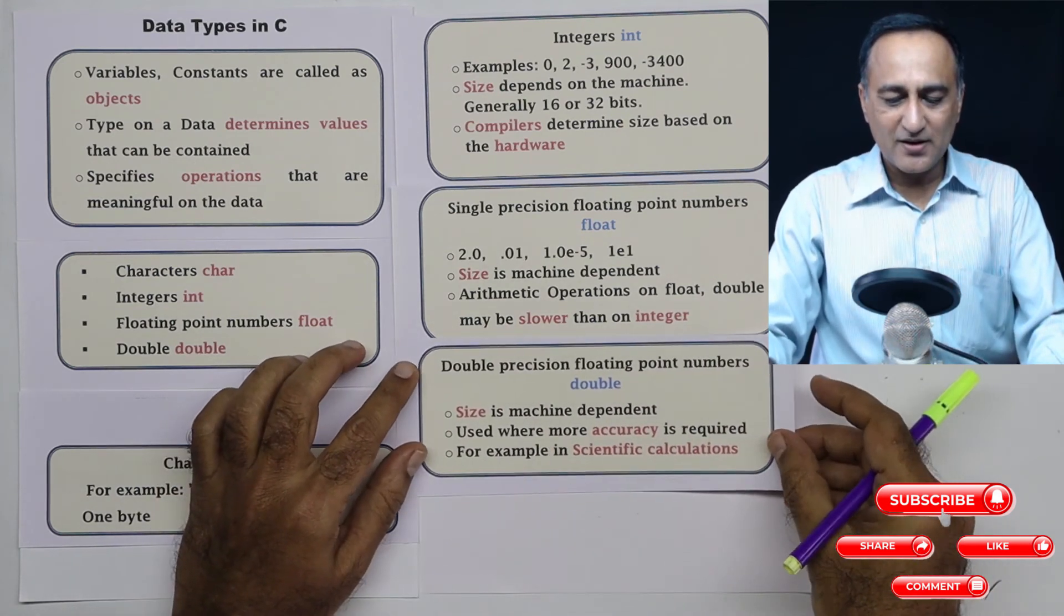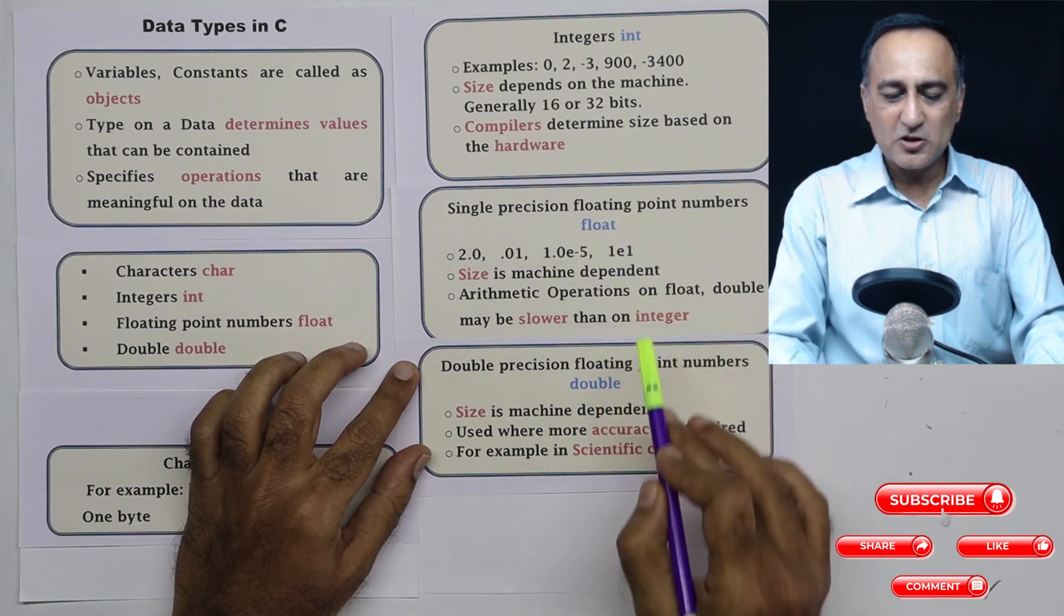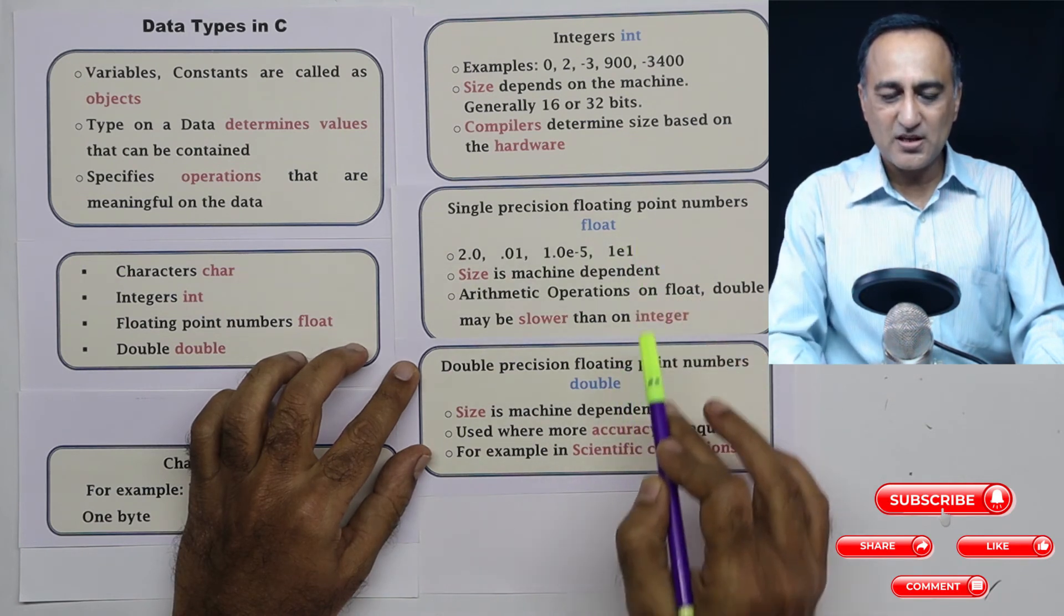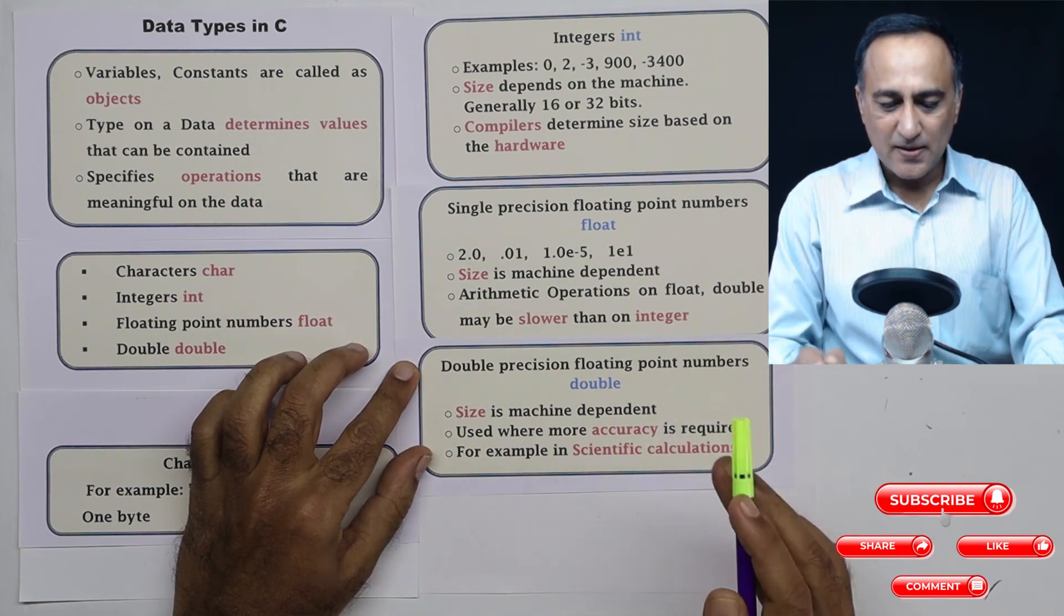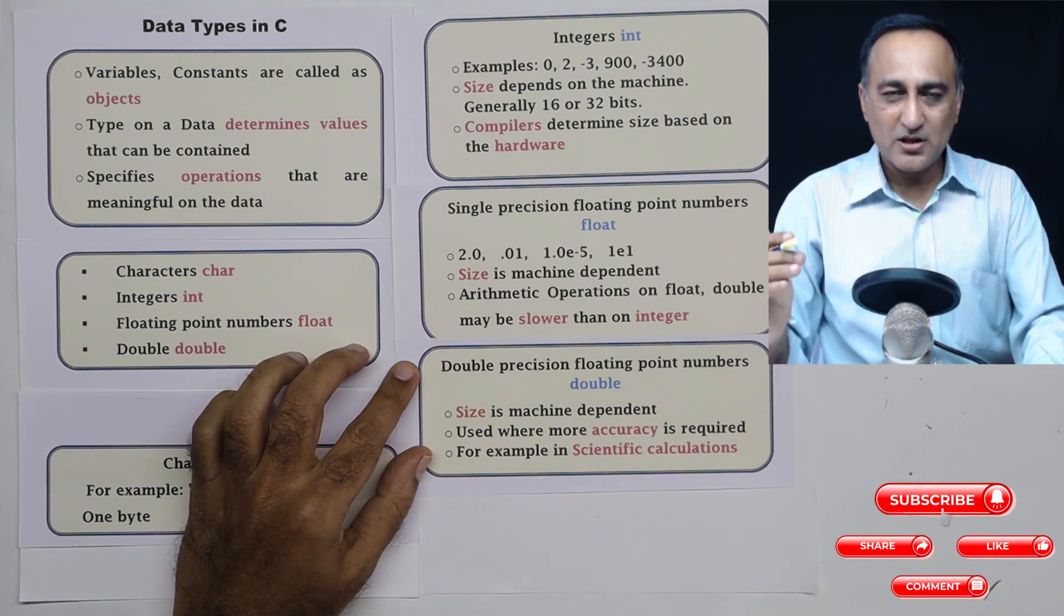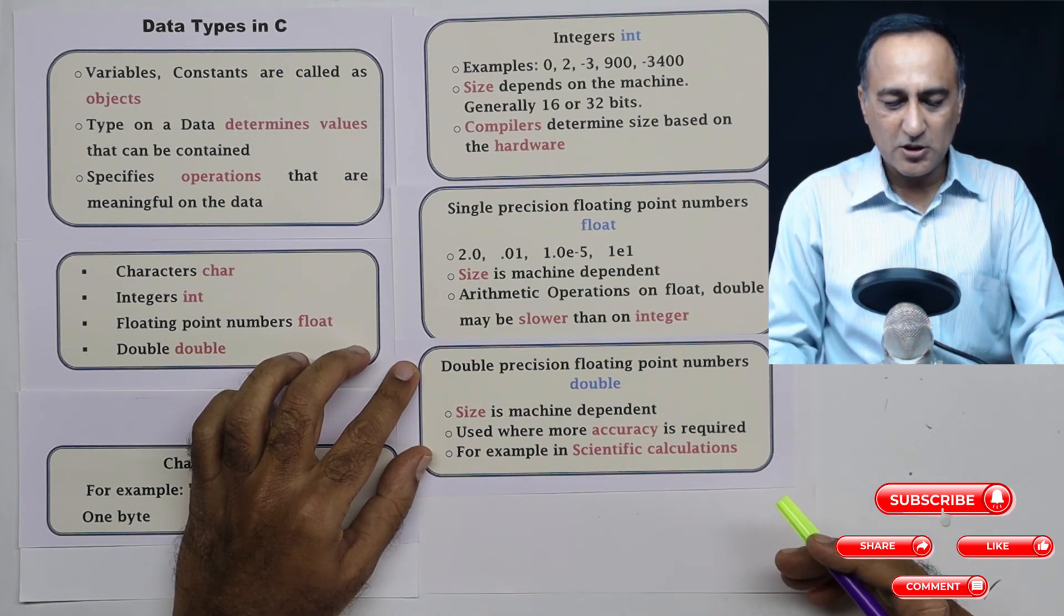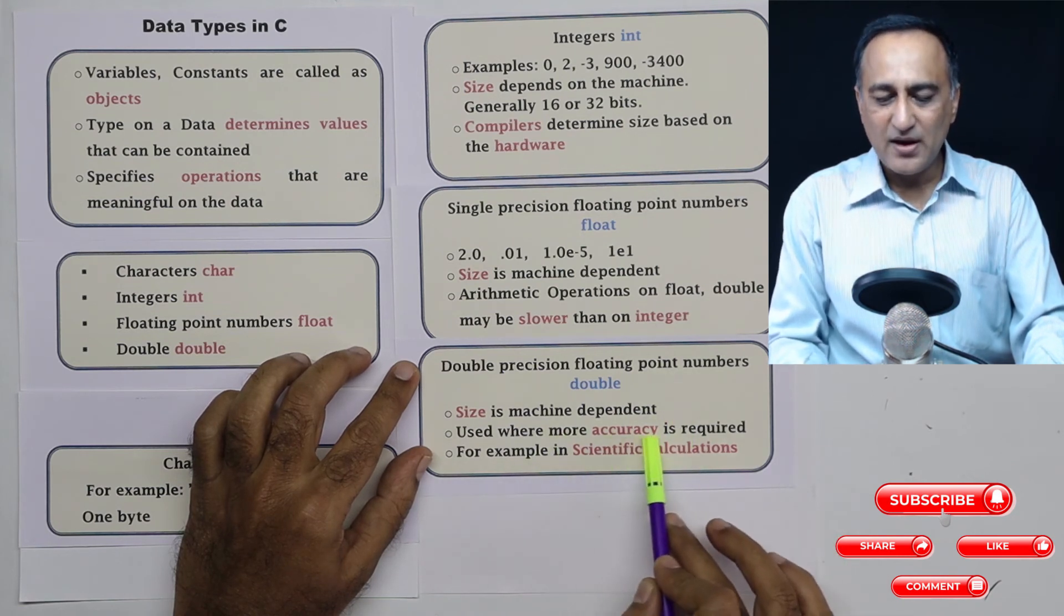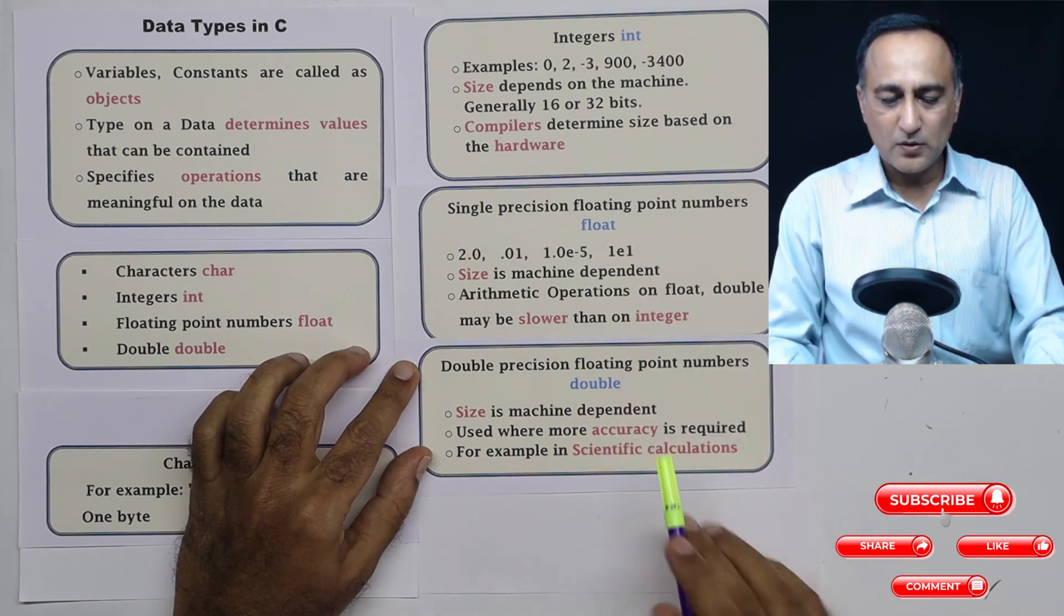Double precision floating point numbers have twice the precision of float. According to IEEE standard, float is 32 bits with accuracy of seven decimal digits, while double is 64 bits with accuracy of 15 decimal digits. The size is hardware dependent and determined by the compiler. Double is generally used in scientific and engineering calculations where the highest degree of accuracy is required.